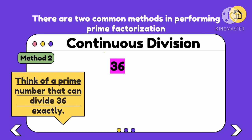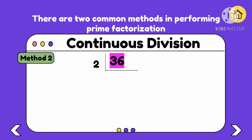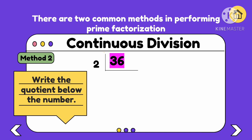Think of a prime number that can divide 36 exactly. Think of a prime number that can divide 36 with no remainder. If you remember the divisibility rules, we can use them in this method. 36 is an even number, so therefore it's divisible by 2. Divide the number. Let's divide 36 by 2 and write the quotient below the number. 36 divided by 2 is 18.